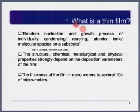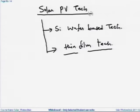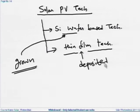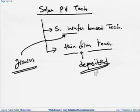One major difference is that thin films are not grown — they are deposited. In contrast, silicon wafers are grown: we grow a silicon ingot from a silicon melt and cut wafers from it. Because thin films are deposited, there is also a difference in the structure and in the cell-making process.